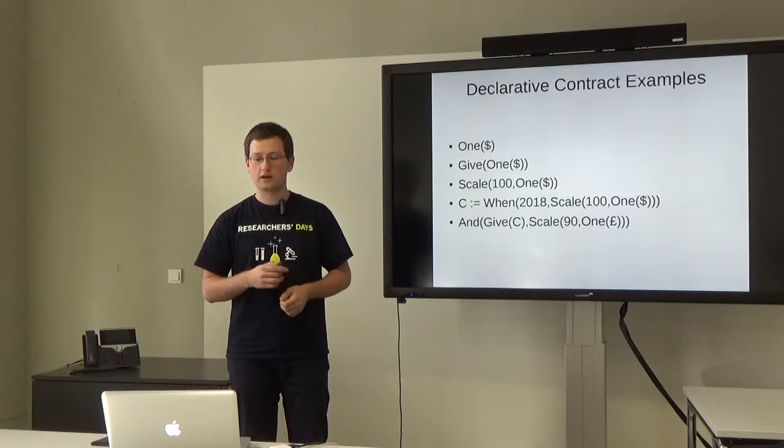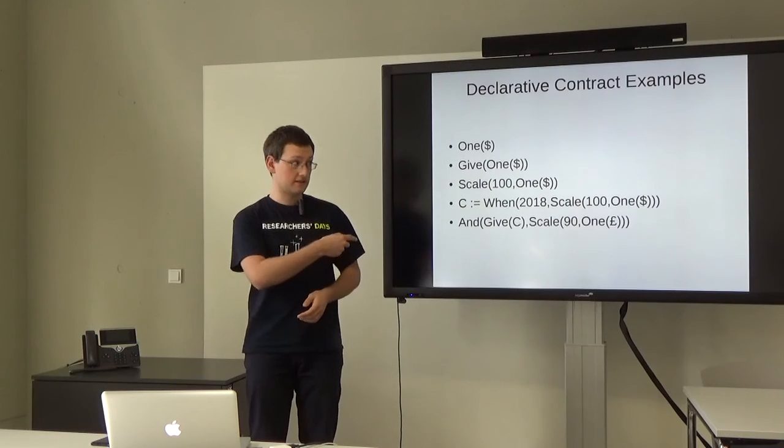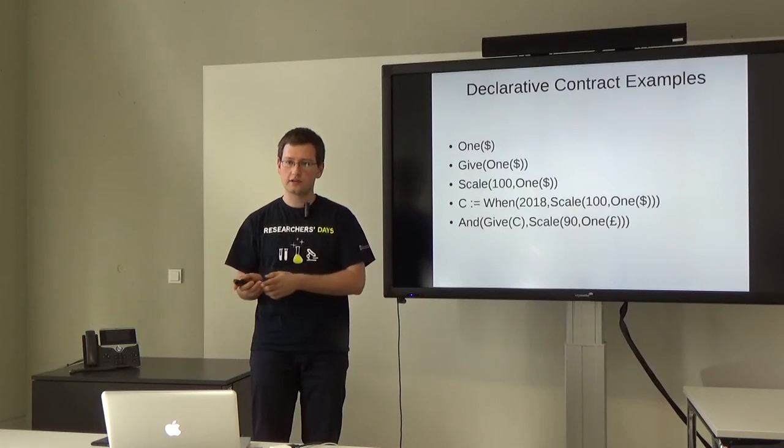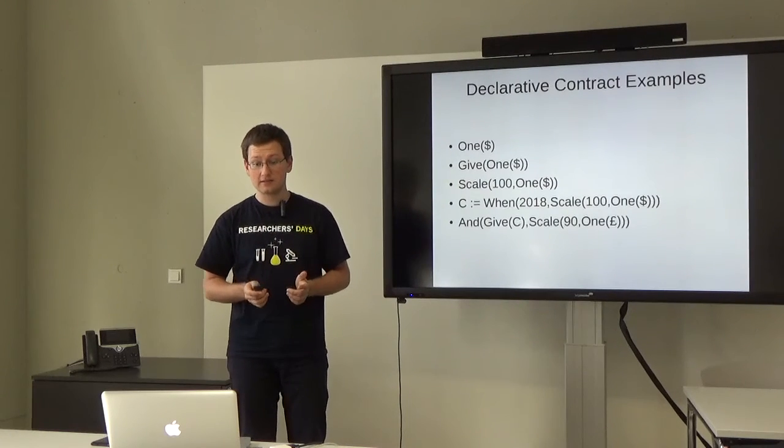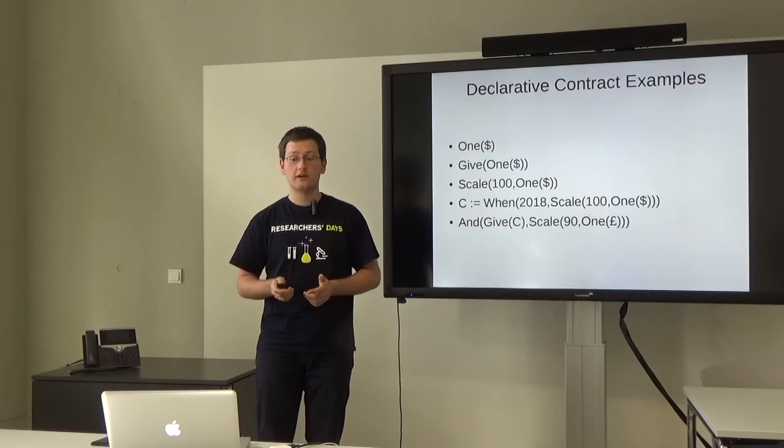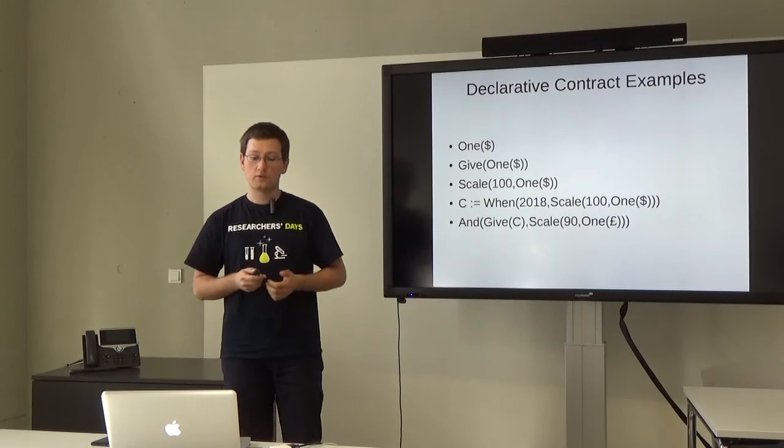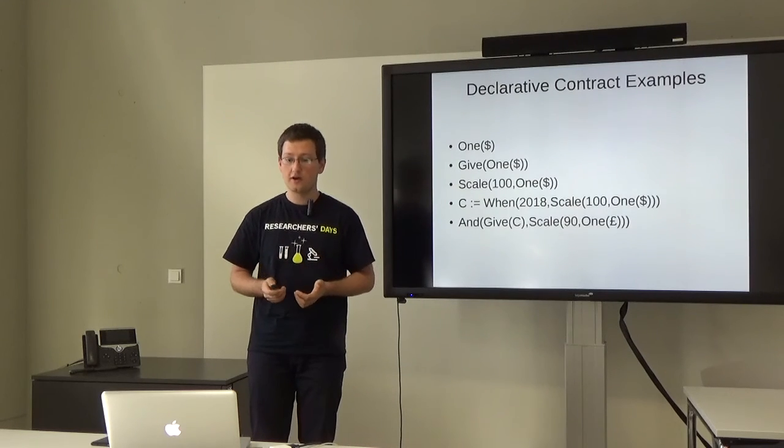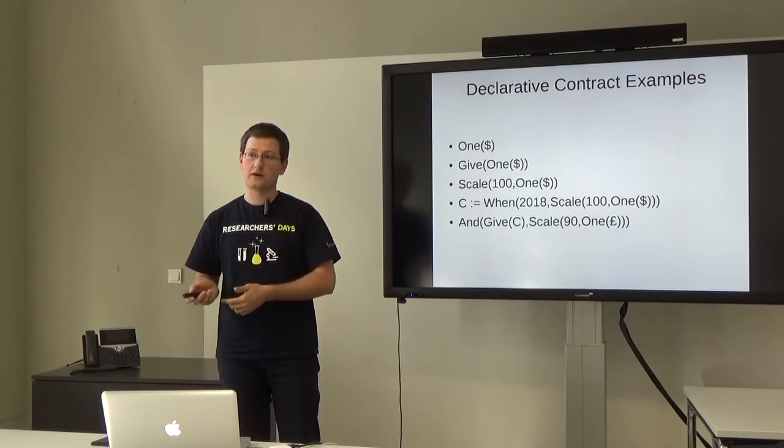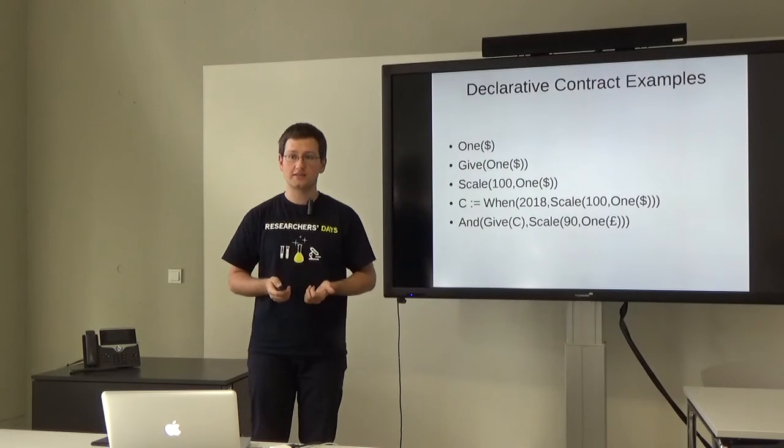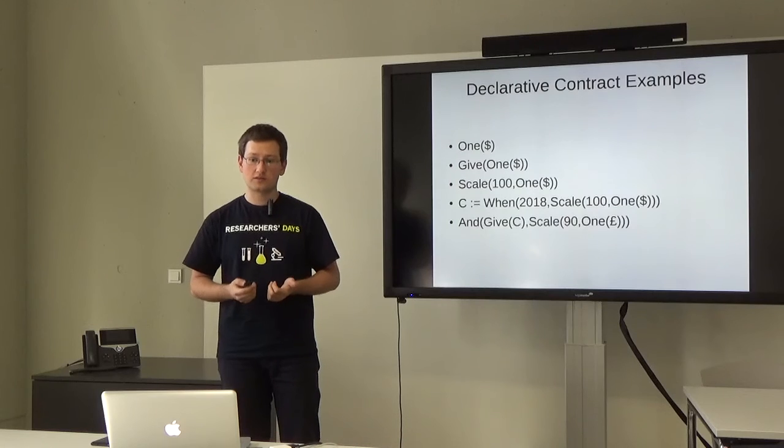The following is a combination of two contracts. We take this C contract, we wrap it into give so that the payment goes in the opposite direction. And we combine it with a scaled contract that transfers 90 British pounds from Alice to Bob. What we have here actually is a simultaneous transfer of one hundred dollars in one direction and 90 British pounds in the other direction. And it actually is a contract that describes a simple currency exchange. That's an example of a contract that we are trying to build.